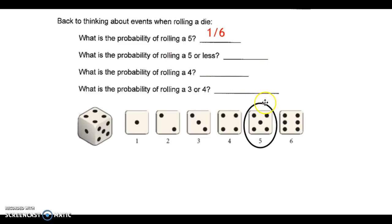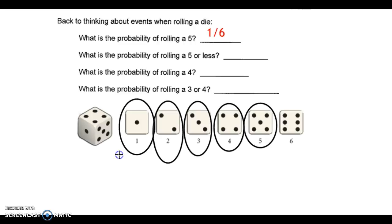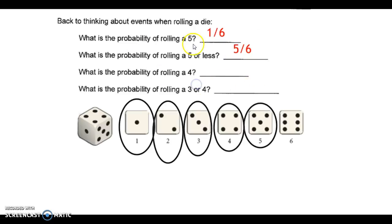The probability of rolling a five or less — we still have five as a desired outcome, but four, three, two, and one are also desired outcomes because they are less than five. So all five of those outcomes are desired, and we divide by the six possible outcomes, giving us five out of six.